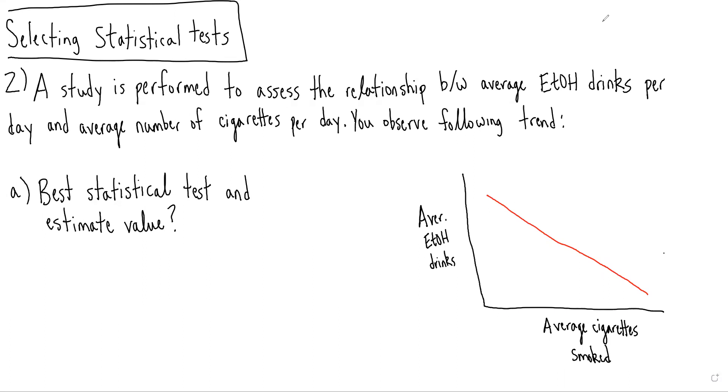So again, when we're selecting statistical tests, there's really three scenarios. One is comparing continuous measures between two or more groups. One is comparing categorical measures like count data between two or more groups. And the last is assessing the relationship between two variables.